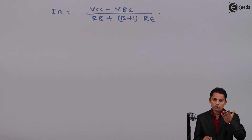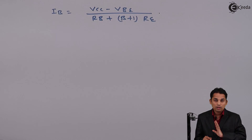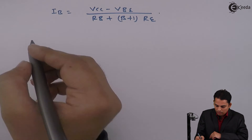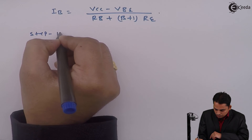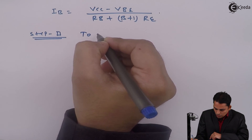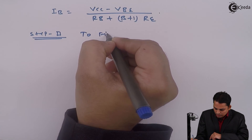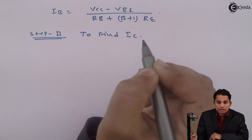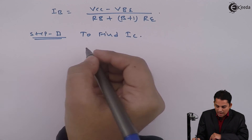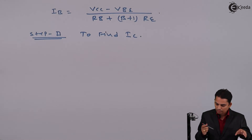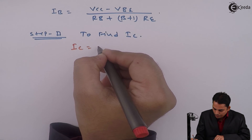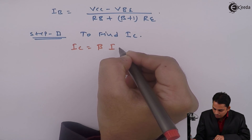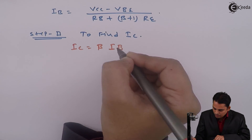Step 2 is to find collector current IC, where IC is given as beta times IB.